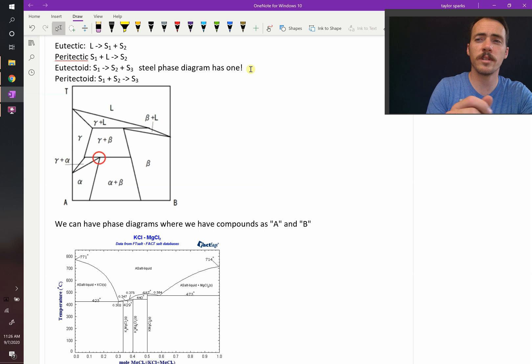So what are these? Well, eutectic is a liquid turning into two different solids. A paratectic is a liquid and a solid turning into a different solid.